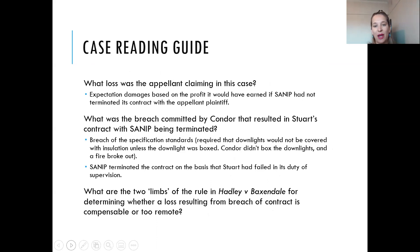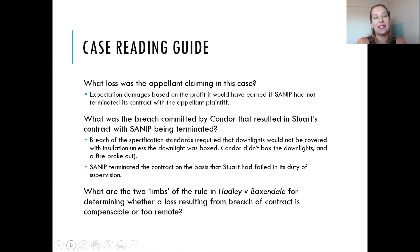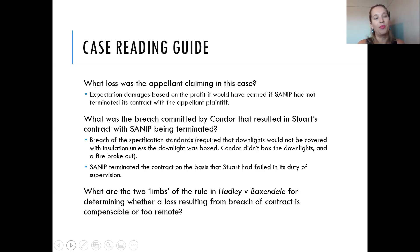What was the breach committed by Condor that resulted in Stuart's contract with SANIP being terminated? The breach was of a building specification standard incorporated into the contract between Stuart and Condor — the requirement that downlights would not be covered with insulation unless the downlight was boxed. Condor insulated five downlights in a house without boxing them, and then the insulation ignited and a fire broke out, which damaged the house.